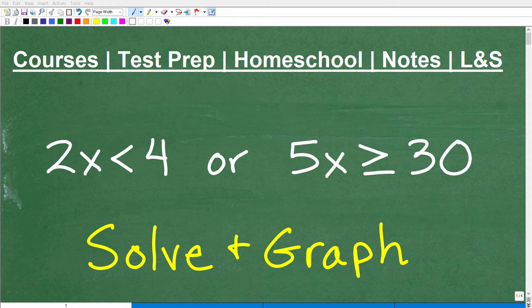Okay, so what do we got going on here? Well, we have some inequalities. Specifically, we have the inequality 2x is less than 4 or 5x is greater than or equal to 30. How do we solve this? Well, I want you to go ahead and try to solve and graph the solution to this problem.